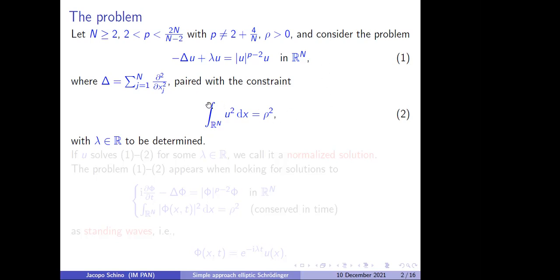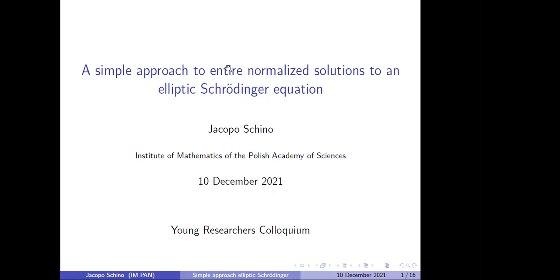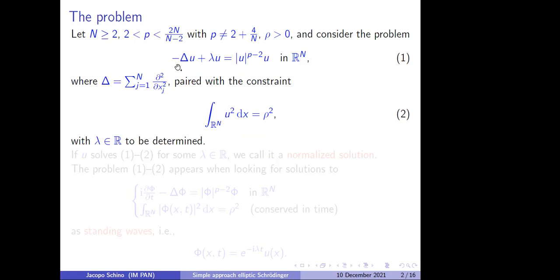We want to look for a solution u that satisfies both one and two simultaneously, while lambda, which also appears in the equation, is in general a real number and is part of the unknown — we do not know lambda a priori. The equation is set in R^n, and this is the meaning of "entire", because it's set in the entire Euclidean space. By "elliptic", for simplicity, I simply mean that this equation has no time dependence. You can think of the variable in R^n as the space variable, but there is no time variable — this problem is time-independent.